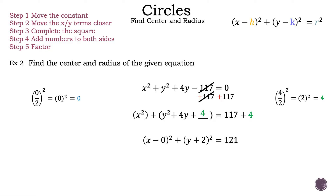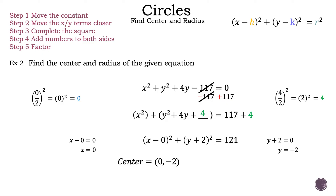Now if the factoring bit was too fast, there is a link in the description below with more detail. Now that our equation is in standard form, let's find the center (h, k). Setting x minus 0 equal to 0 gives x equals 0 — our center did not shift any units left or right from the origin. It is not necessary to write the minus 0 in parentheses, but we did it to show you where h comes from. Setting y plus 2 equal to 0 and adding negative 2 to both sides gives y equals negative 2 — our center shifted two units down. So our center is (0, negative 2), and the radius is the square root of 121, which is 11. And that is example 2.